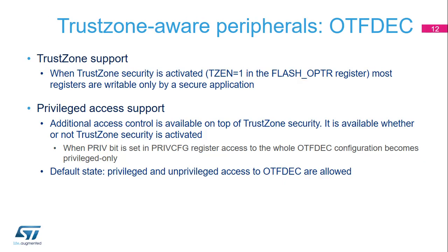The OTF-DEC is a TrustZone-aware peripheral. When TrustZone is disabled, only the privileged attribute is relevant. By setting the PRIV bit in the privileged configuration register PRIV-CFGR, unprivileged reads return 0 and unprivileged writes are ignored. When TrustZone is enabled, non-secure write accesses to OTF-DEC registers are discarded, and OTF-DEC regions can only be programmed by secure applications. The privileged attribute can also be set when TrustZone is enabled.